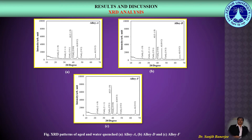Here in this figure we can observe the XRD patterns of the aged and water-quenched alloy A — the base 2219 aluminum alloy — then alloy D with 0.06 weight percent cadmium, and alloy F with 0.1 weight percent cadmium. From the XRD patterns we can detect primarily aluminum, which is the matrix phase, along with CuAl₂ or the theta phase. The lattice parameters of these crystallographic phases could also be detected from the XRD analysis.